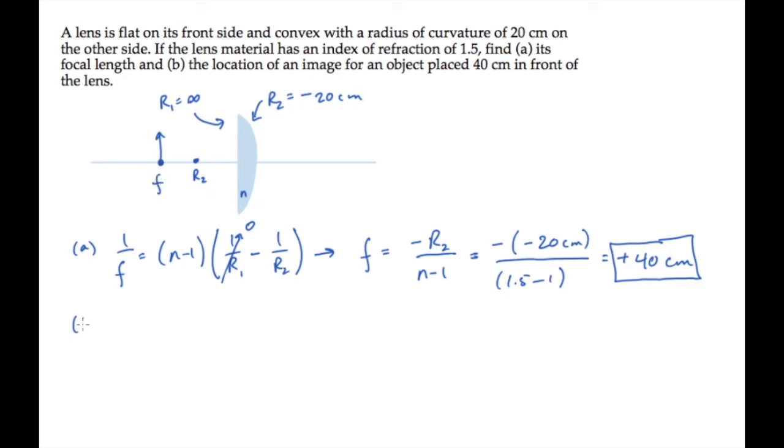We see now from the thin lens equation that 1 over q must equal 0, which means that the image distance q goes to infinity. For an object placed at the focal point, the image forms at infinity.